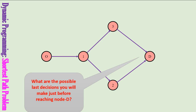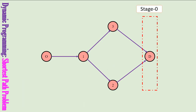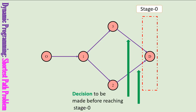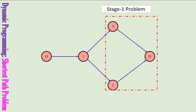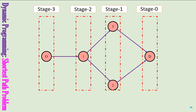In backward recursion, this is how we number: the last stage will be called stage 0, and then the stage just before stage 0 will be called stage 1. These are the decisions made before reaching stage 0, and the last decisions are made from stage 1. The stage 1 problem is defined as starting from stage 1 and ending in stage 0. That is how we define the stages in backward recursion.